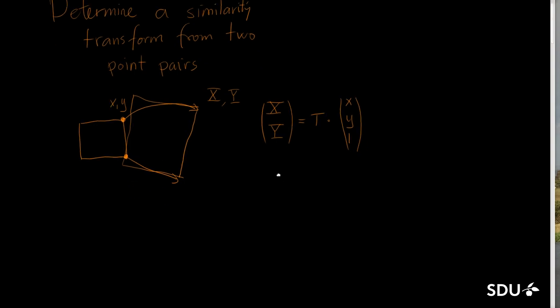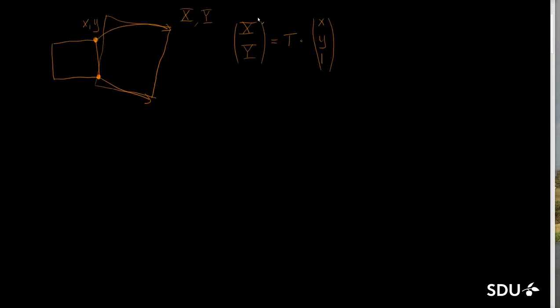Now the question is, what is the structure of this transforming matrix? We can see it should be multiplied with a 3 by 1 matrix, or vector, and the output should be a 2 by 1. So the dimensions of this one should be 2 by 3.